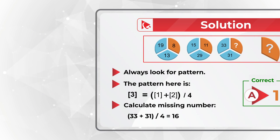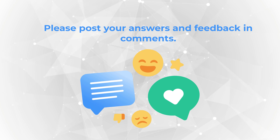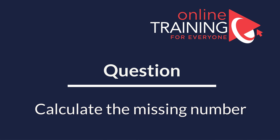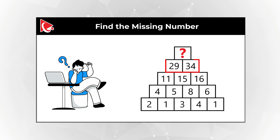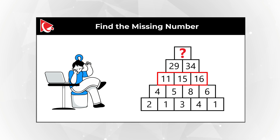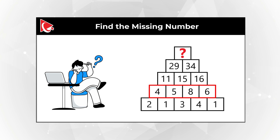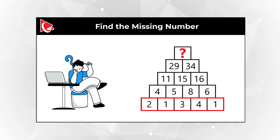Hopefully you've enjoyed this tricky question and now know how to answer similar problems on the test. Here's a tricky problem that you might find challenging to solve. You're presented with a pyramid. The top of the pyramid starts with a missing number you need to calculate. The second row contains numbers 29 and 34. The next row contains numbers 11, 15, and 16. The following row has numbers 4, 5, 8, and 6. And the last row has numbers 2, 1, 3, 4, and 1. You need to calculate the missing number at the top.